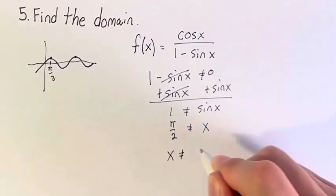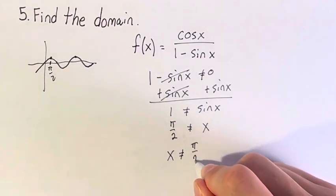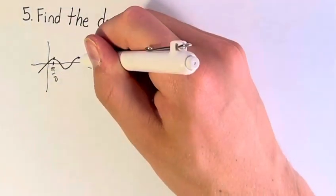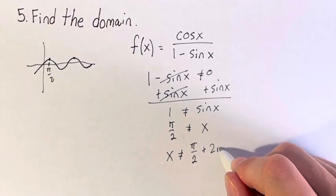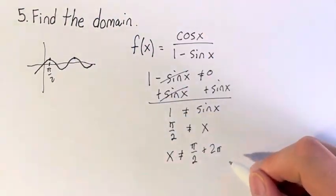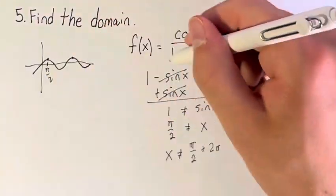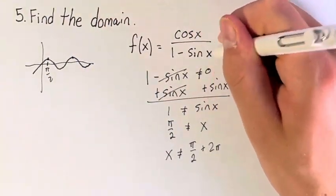So x is not equal to pi over 2 plus this distance, plus 2 pi, or plus this distance again, plus 4 pi, plus 6 pi. Every 2 pi, you're going to get another invalid value, because sine of x is going to be equal to 1.